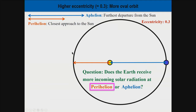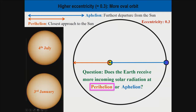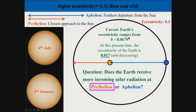We can see this right now: on 4 July, the Sun appears smaller in the sky than on 3 January. That tells us Earth's current orbit is not perfectly circular. In fact, the current eccentricity of Earth's orbit is 0.017, which means perihelion is on 3 January (when we're closest to the Sun) and aphelion is on 4 July (when we're furthest away).